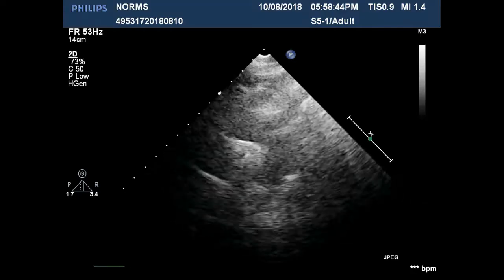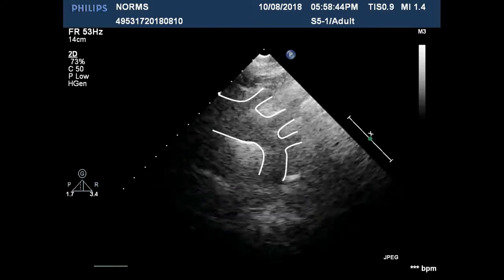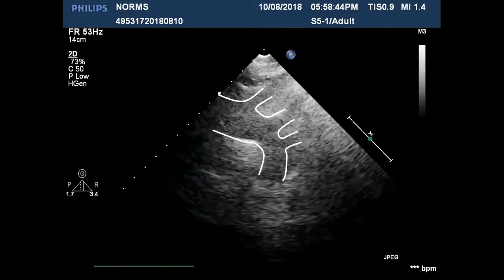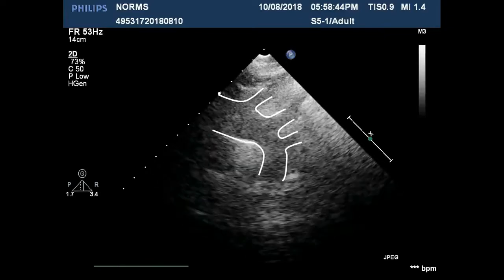This is the aortic root, the arch, and the ostia of the innominate, subclavian, and common carotid arteries, and below is the descending thoracic aorta. You should check all these views for features of aortic dissection.